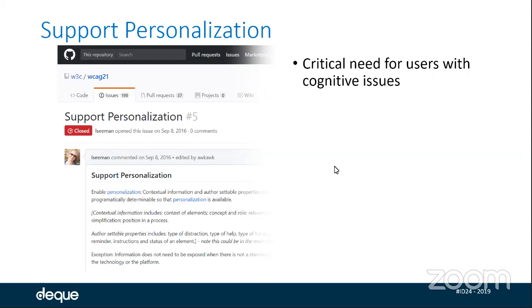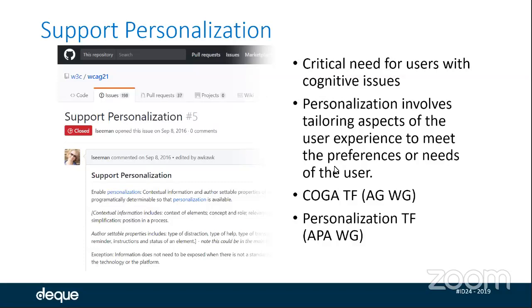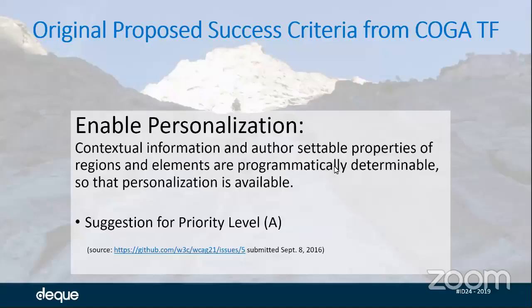That was the original requirement put forward, but unfortunately it was really kind of broad. They proposed text that said: enable personalization — contextual information and author-settable properties of regions and elements are programmatically determinable, so that personalization is available. They even suggested a priority level of level A, because from the perspective of users in the cognitive disabilities task force, they felt this was a critical thing that needed to be met. But one of the things we had to remind members of the COGA task force was that even though it may feel essential to that particular user group, we had to be sure it could be applied to all websites and all types of content.